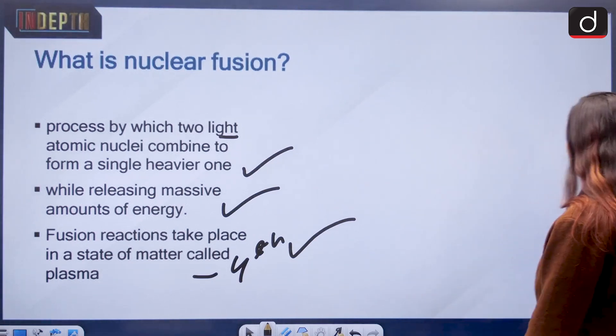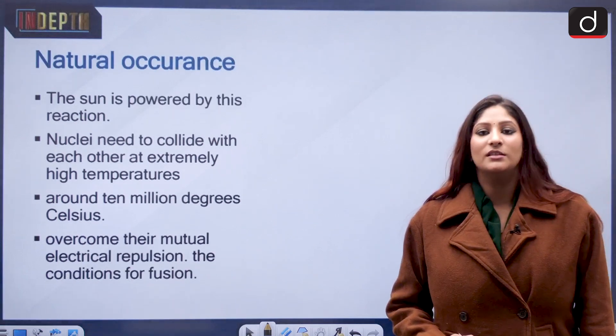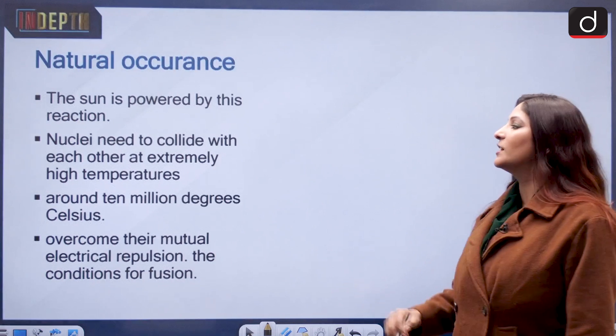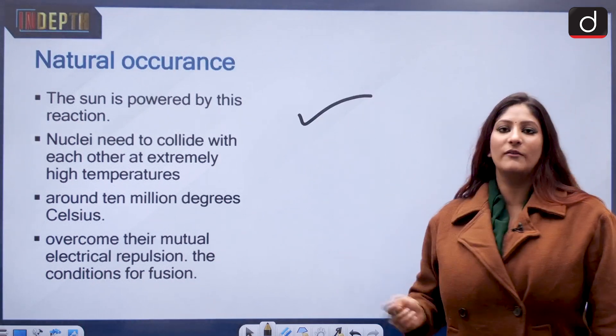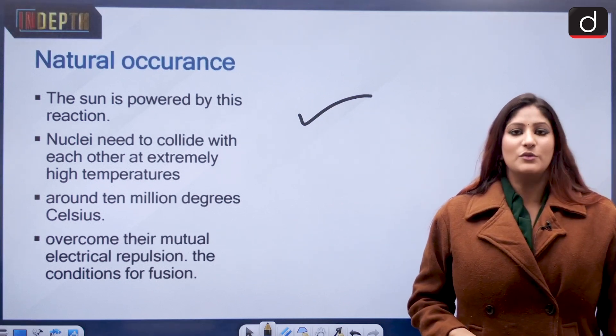Let's talk about natural occurrences. The sun and all of the stars are powered by nuclear reaction only. How does it happen? When fusion has to take place, the nuclei need to collide with each other.